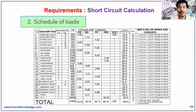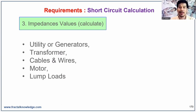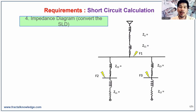In our previous discussion, I covered what to do with the length of wires. The third requirement is the calculated impedances of the utility, transformer, wires, cables, motors, lamp loads. These should be tabulated — we have an Excel file for the tabulation of those impedances.